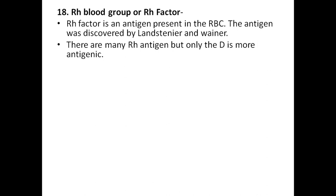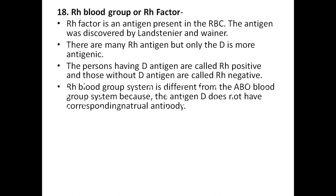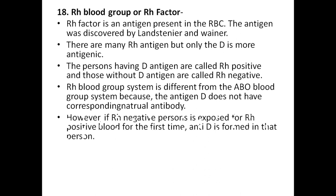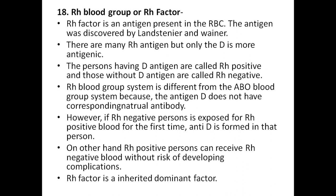Rh blood group and Rh factor: Rh antigens are present on RBCs; they were discovered by Landsteiner and Wiener. Only the D antigen is the most important antigenically. Persons having the D antigen are called Rh positive; persons without D antigen are called Rh negative. The Rh blood group system differs from ABO because there is no corresponding natural antibody. However, when an Rh-negative person is exposed to Rh-positive blood for the first time, antibodies are formed. Rh-positive persons can receive Rh-negative blood without risk of complication. Rh factor is an inherited dominant factor. Thank you for listening; once more, this is not a substitute for your textbook or notebook — just a revision of physiology. We will see one more session on blood groups next time.